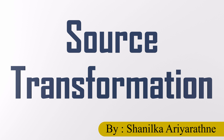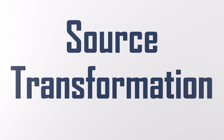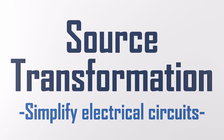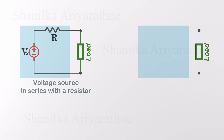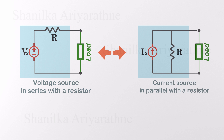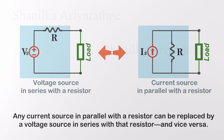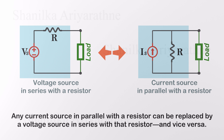Source transformation is another great tool for simplifying electrical circuits. Here's how it works: you can swap a voltage source in series with a resistor for a current source in parallel with the same resistor, or the other way around. In simpler terms, any current source in parallel with a resistor can be replaced by a voltage source in series with that resistor, and vice versa.